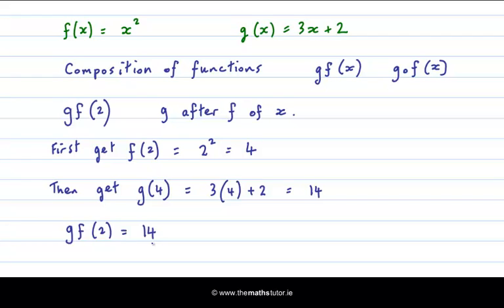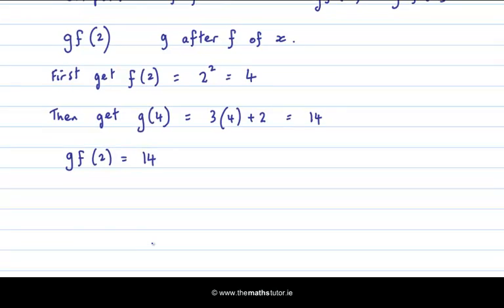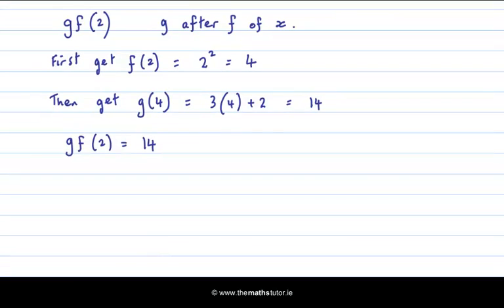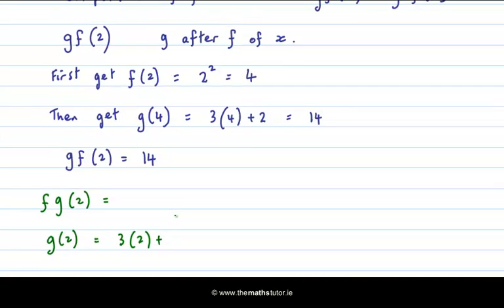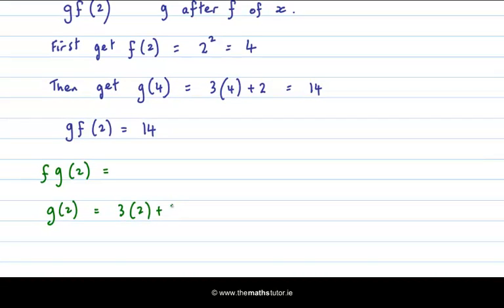Now let's try f after g. Let's try f after g of 2 means we first do g of 2. So that is g of 2 equals 3 times 2 plus 2, which is 6 plus 2, which is 8. And then we get f of the result. f of 8 is 8 squared, which is 64. So we see that f of g of 2 is 64.